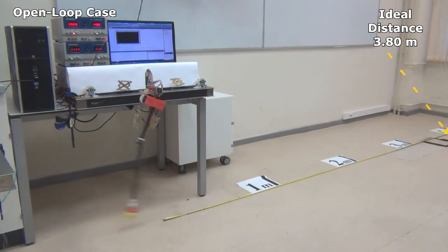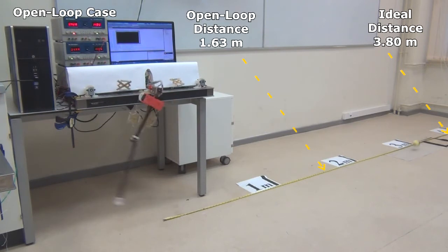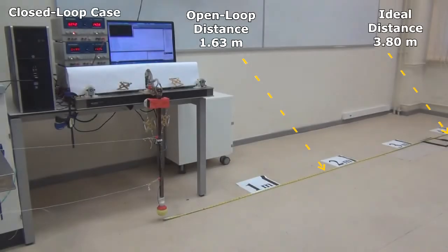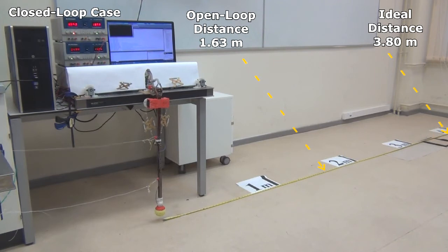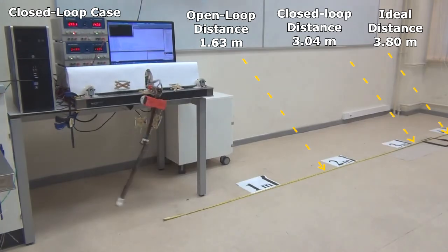The external disturbance is applied through tendons attached to both links of the robot via magnets. The open-loop control results in 1.63 meters throwing distance. The throwing distance with closed-loop control is 3.04 meters, which is close to the distance obtained in the nominal case.